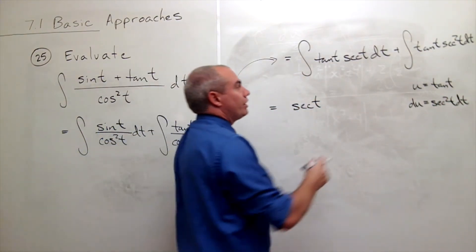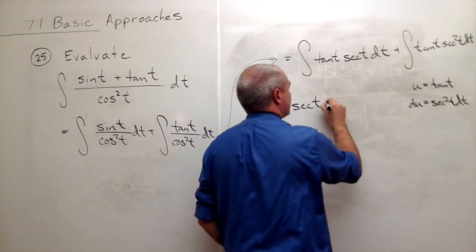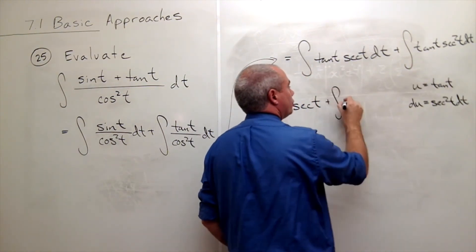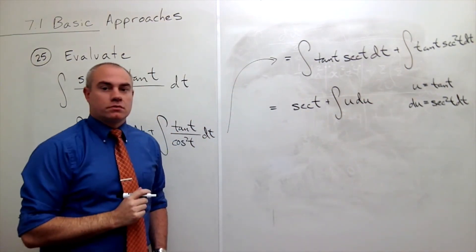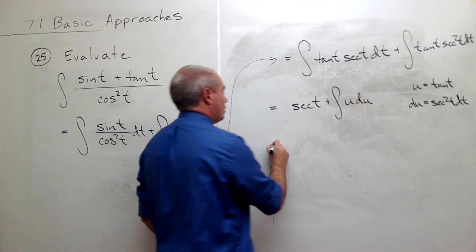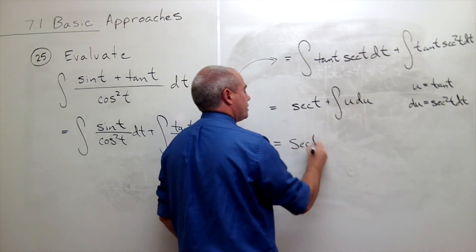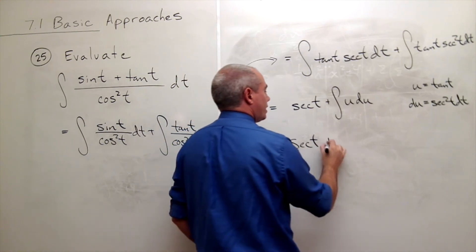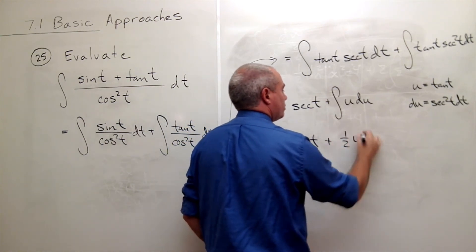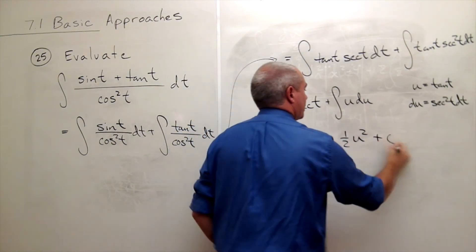Now I could rewrite this integral as the integral of u du. I still have this secant t sitting here, and the antiderivative of u is one half u squared plus c.